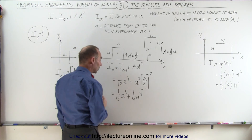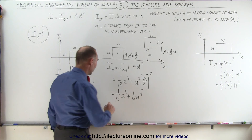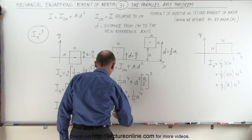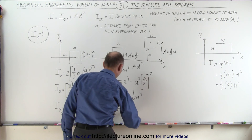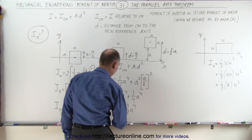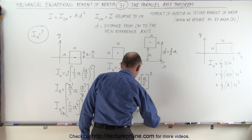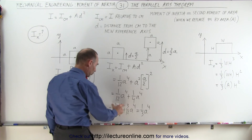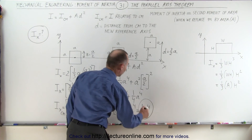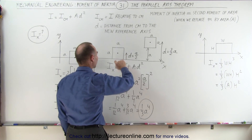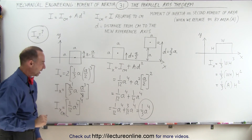So, 1/12 plus 1/4 — the common denominator is 12 — gives us 1/12 a to the fourth plus 3/12 a to the fourth, which is 4/12, or 1/3 a to the fourth. So this is the moment of inertia of the same square when we move it a distance d equal to a/2, as opposed to 1/12 a to the fourth when the center mass is on the axis.